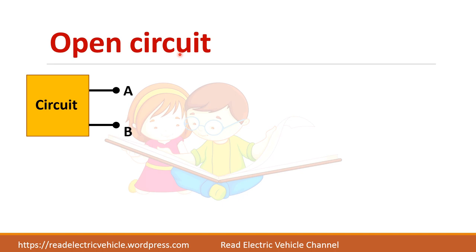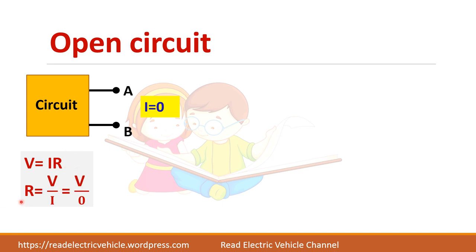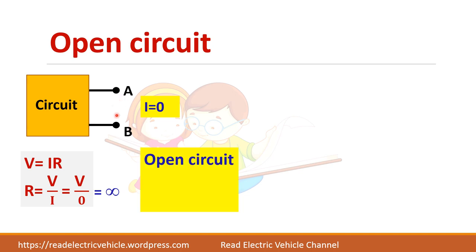Now let us see what an open circuit condition is. Take any electrical circuit and look at the outer terminals A and B — they are open. When something is open, current will be zero. Since V equals IR and R equals V by I, with current equal to zero, R is infinite (V divided by 0 is infinite). So under open circuit condition, current is zero and resistance is infinite.